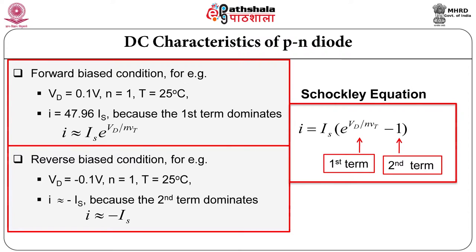In reverse bias condition, if you take minus 0.1 volt with n equal to 1, you will see that the first term will be negligible. That is why I equals minus I_s. So this Shockley equation explains forward bias as well as reverse bias condition.